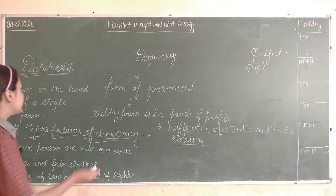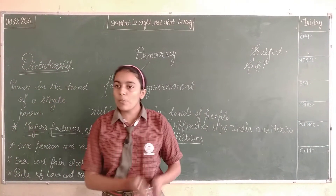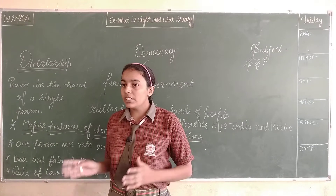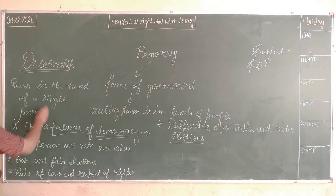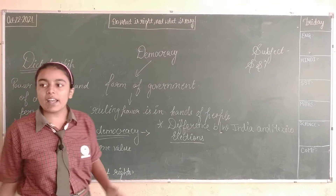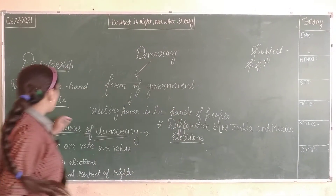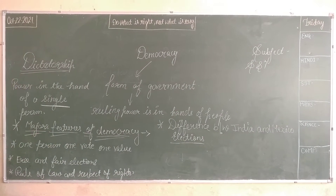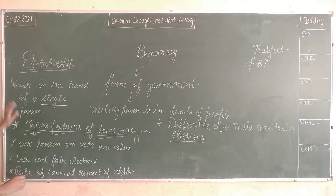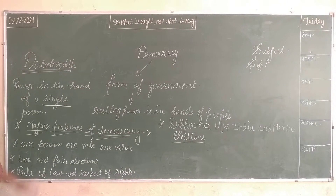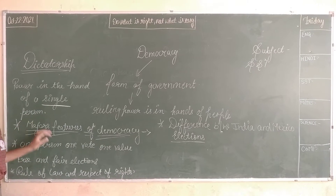Next is dictatorship. Dictatorship is opposite to democracy. In dictatorship, all the powers are in the hands of a single person, and no one can hold them answerable. So in dictatorship, power is in the hands of a single person.